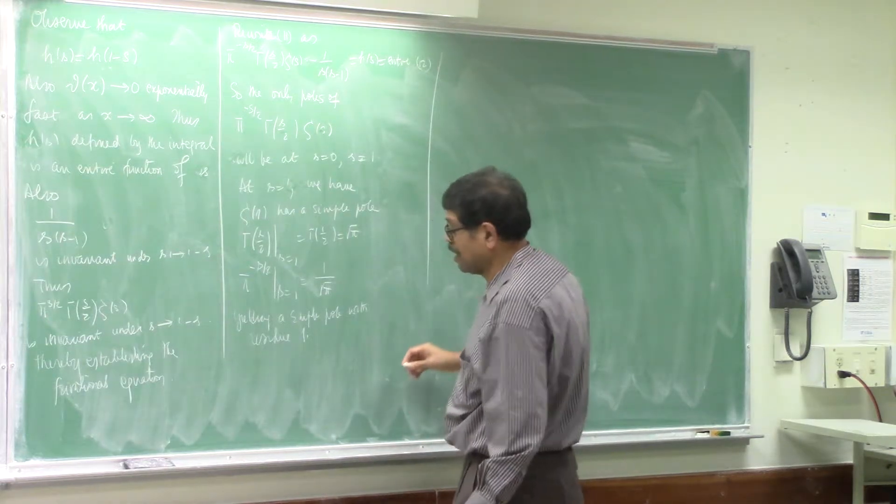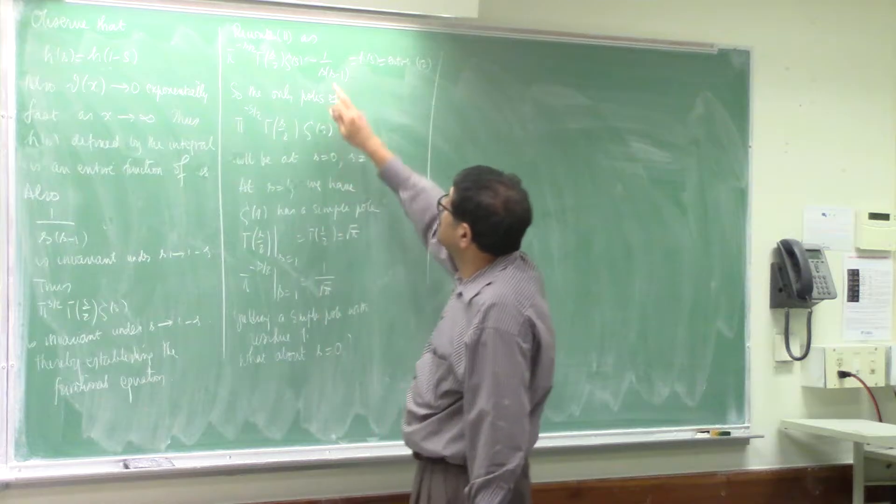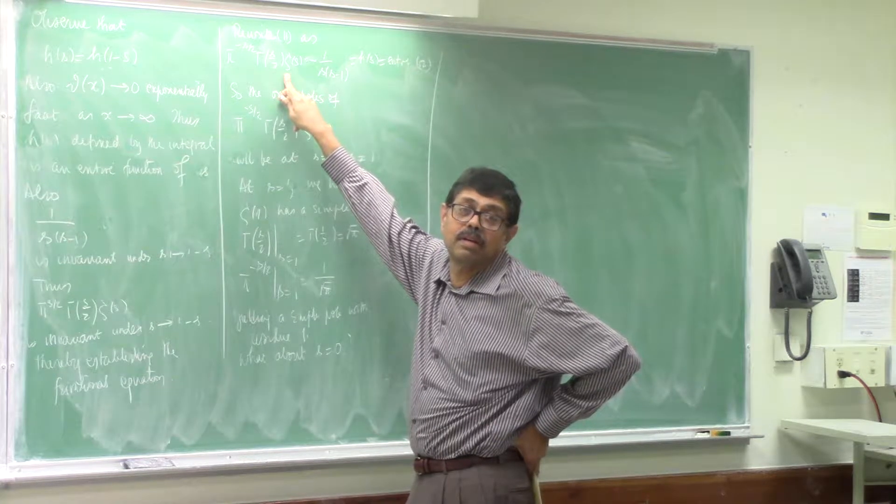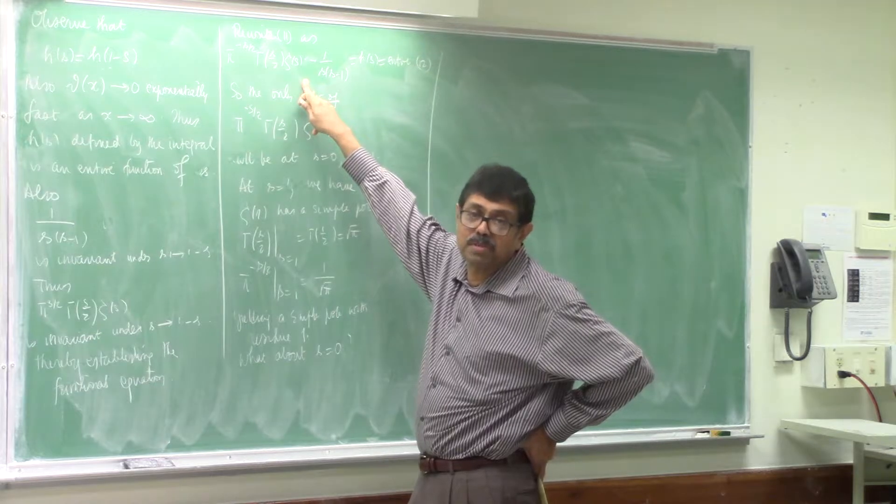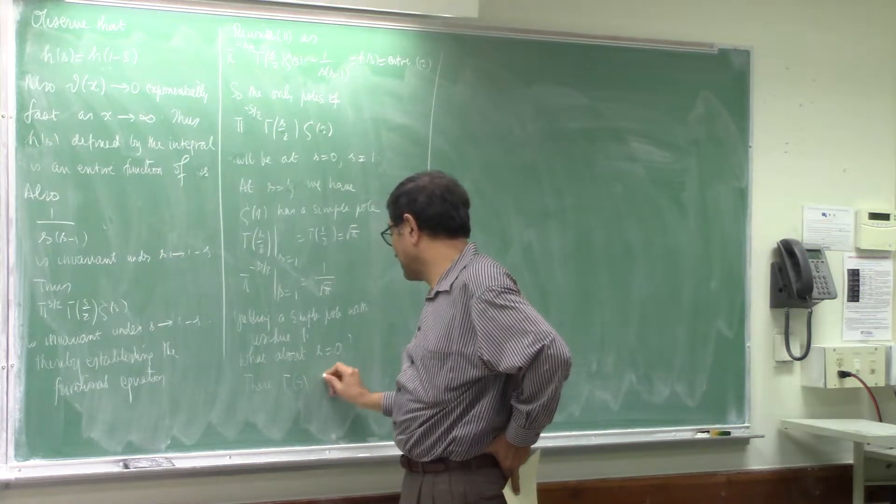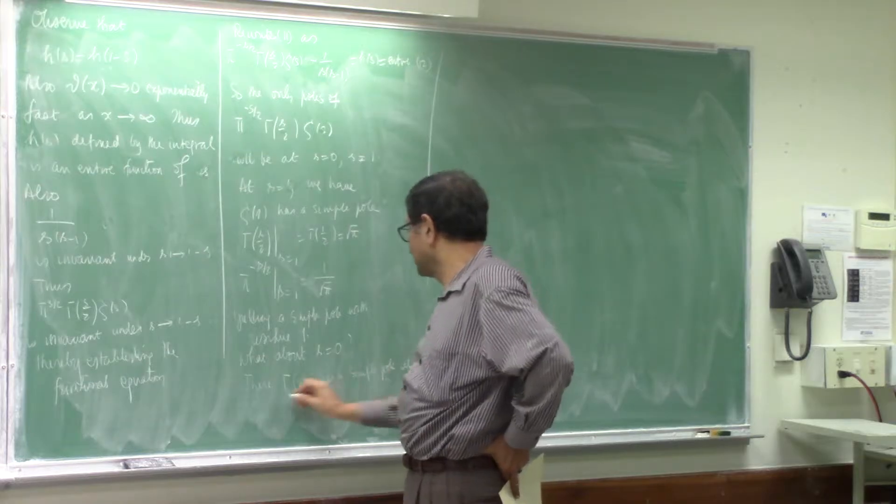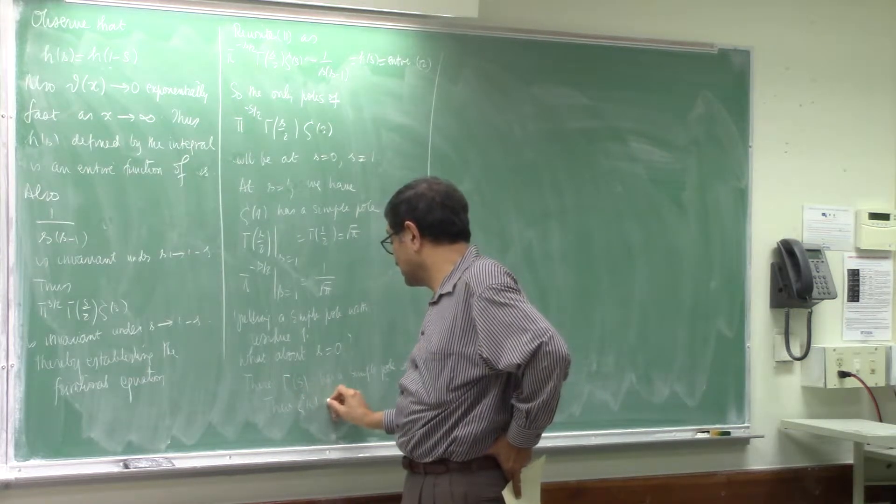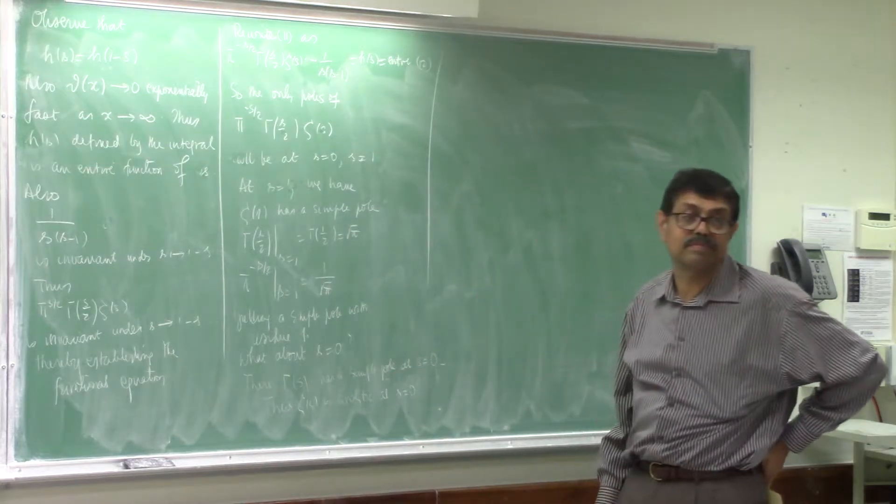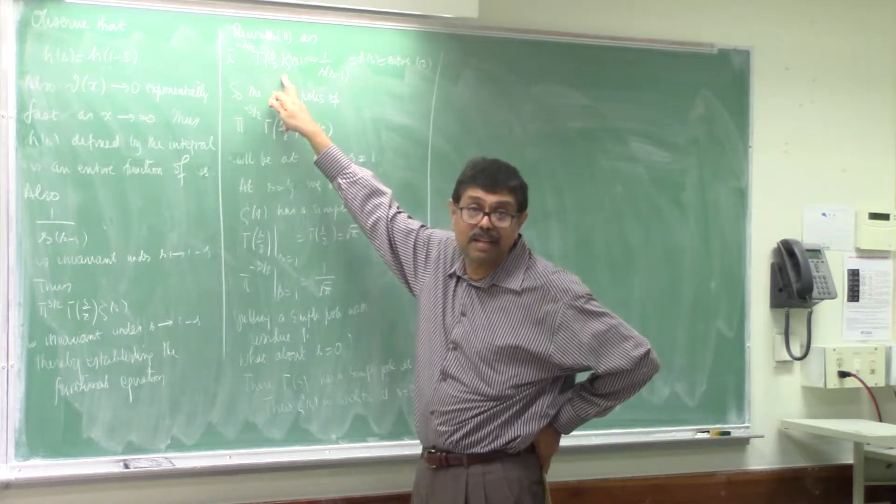So what about s equal to zero? Well, this has a pole. But at s equal to zero, the gamma function has a simple pole. Therefore, the Riemann zeta function must be analytic at zero. There, gamma s has a simple pole at s equal to zero. Thus, zeta s is analytic at s equal to zero. Because the pole of the gamma function is what has been matched with the simple pole. So this has got to be analytic. It cannot have a pole.